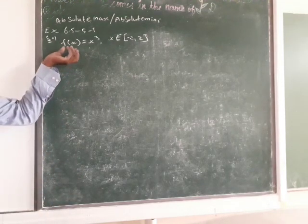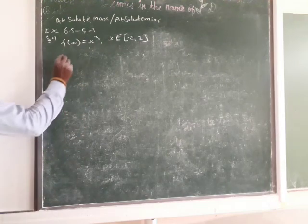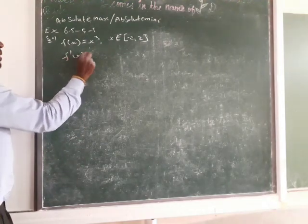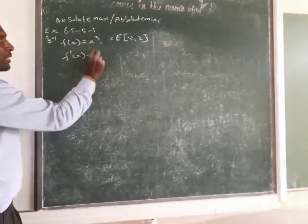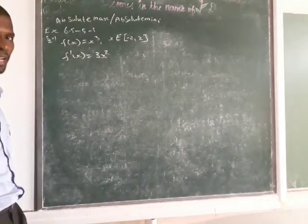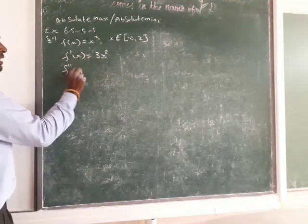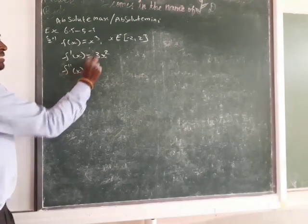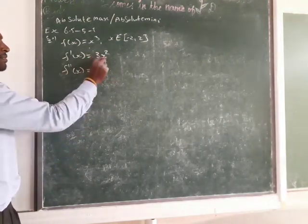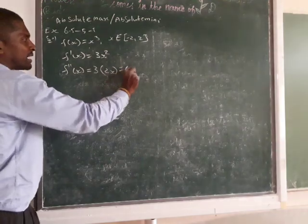Simple. First you find the derivative. First you find f dash of x — x cube becomes 3x squared, using the power rule x over n minus 1. Then f double dash of x: 3 is the coefficient, the derivative of x squared becomes 2x, so finally you get 6x.